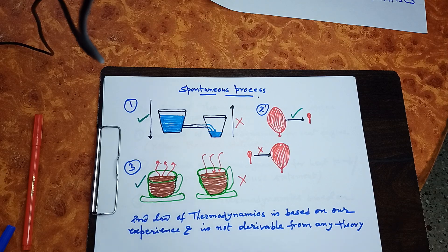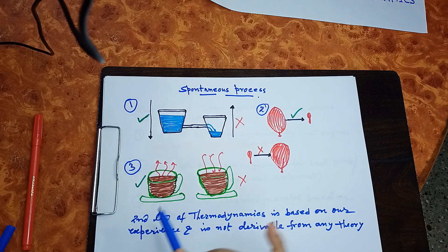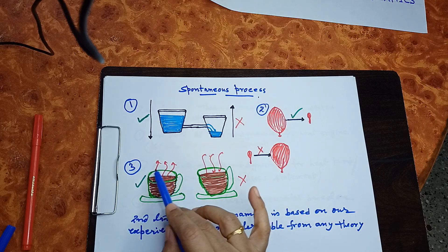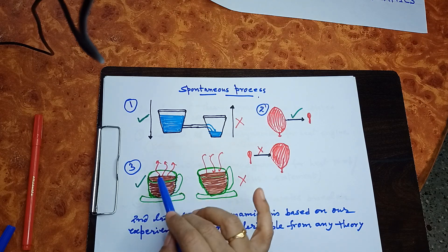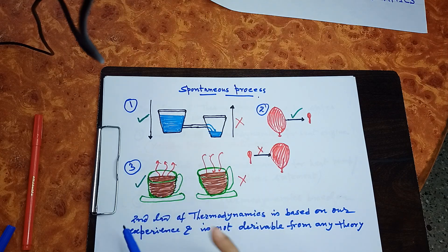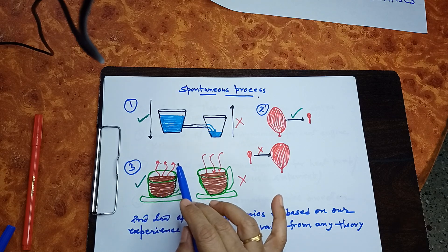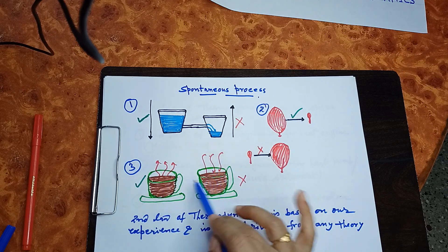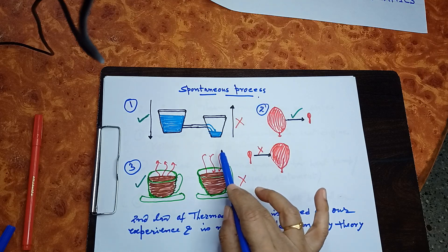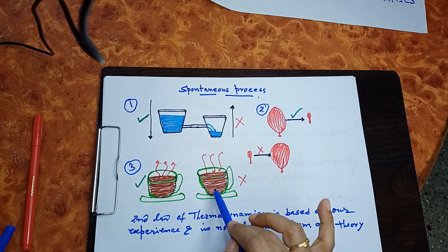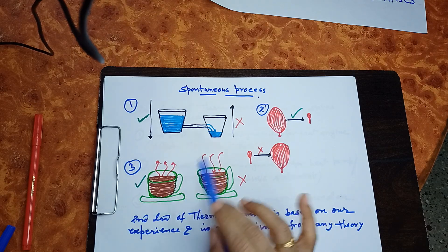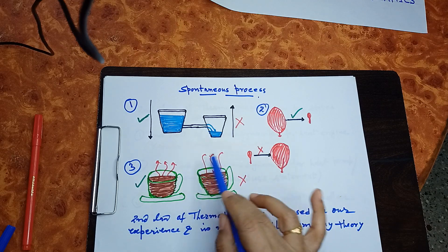Here is a third example: a cup of hot tea. The heat energy from this liquid goes to the surroundings, and after some time this tea will become cold — that is the spontaneous process. But the reverse — heat energy from the cold surroundings cannot enter into the hot tea and make it hotter — that is non-spontaneous.